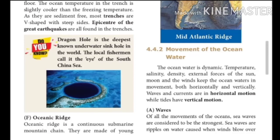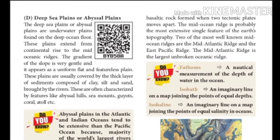Next, oceanic ridge: an oceanic ridge is a continuous submarine mountain chain made of young basaltic rock, formed when two tectonic plates move apart. The mid-ocean ridge is probably the most extensive single feature of the earth's topography. Two of the most well-known mid-ocean ridges are the Mid-Atlantic Ridge and the East Pacific Ridge.